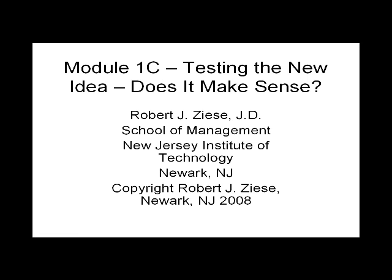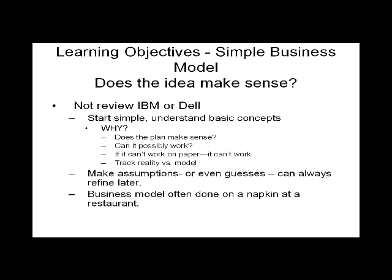This is module 1C, testing the new idea. Does it make sense? The objective of this module is to go through some simple examples in terms of trying to identify and evaluate an opportunity. Should we try to do this? Does it make any sense? We're not going to take a complicated case like IBM or Dell. We're going to start with two very simple, almost trivial examples, but we want to make sure that everyone understands the basic concepts.